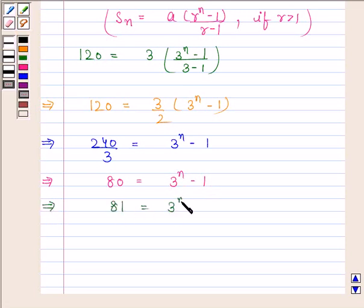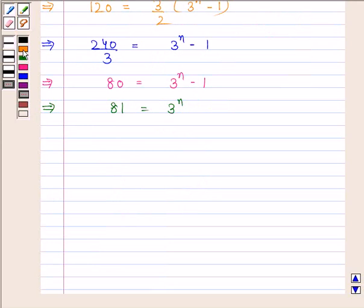And this implies, we can write 81 as 3 to the power 4. So, we have 3 to the power 4 is equal to 3 to the power N. Since the base is same, therefore, on comparing powers, we get N is equal to 4.